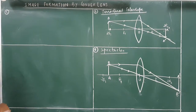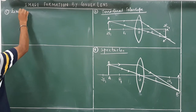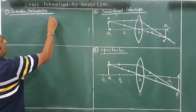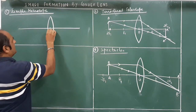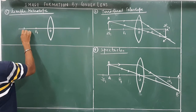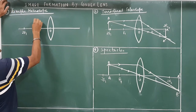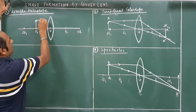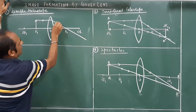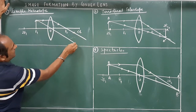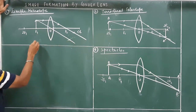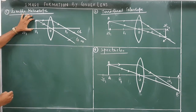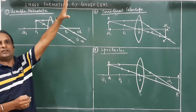Next, we will see how this convex lens is used in a simple microscope. Here we have a lens with the principal axis. The object is situated at f1, that is at the focus of the lens. The ray coming parallel to the principal axis passes through the focus, and another ray through the optical centre goes undeviated. We see that these rays go to infinity. So if the object is at f1, the image is formed at infinity.